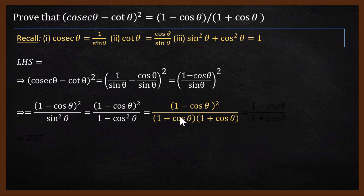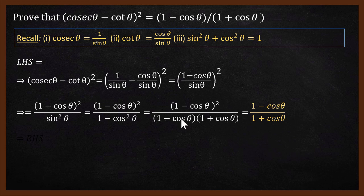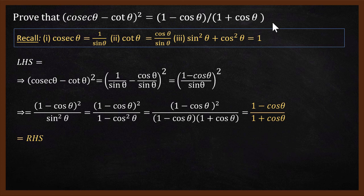Now 1 minus cos squared theta in the denominator becomes 1 minus cos theta times 1 plus cos theta, so the 1 minus cos theta factor cancels with the numerator. We are left with 1 minus cos theta divided by 1 plus cos theta, which is the right-hand side. Hence, proved.